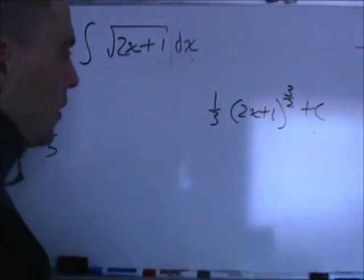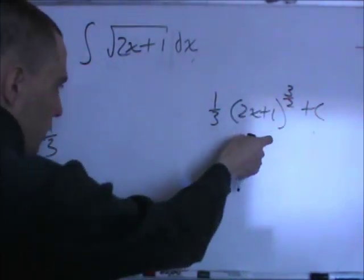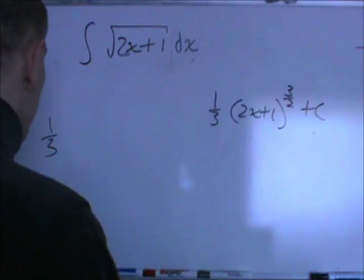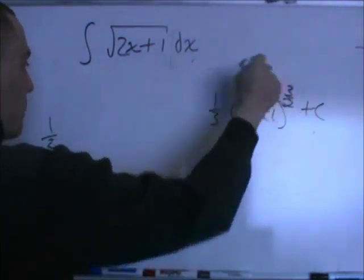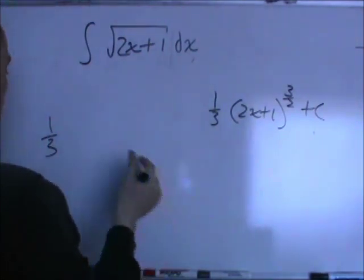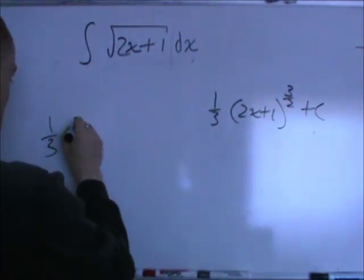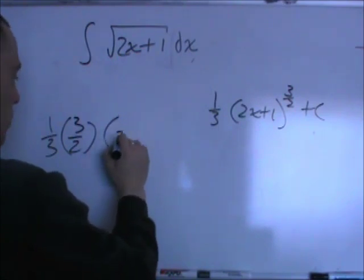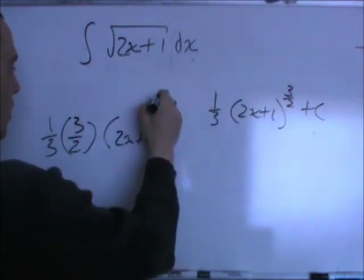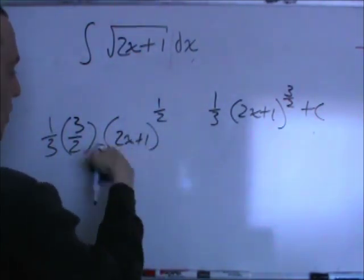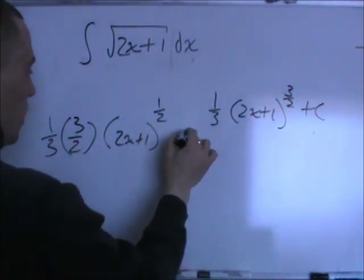Alright, so the derivative of the outer function evaluated at the inner function times the derivative of the inner function. So what we're going to do here, because it's the chain rule with respect to this bit. Okie dokie. So what is that? Evaluated at the inner function. So that's 2x plus 1. Subtract that 1, that's going to be 1 half times the derivative of the inner function, which is just going to be 2.